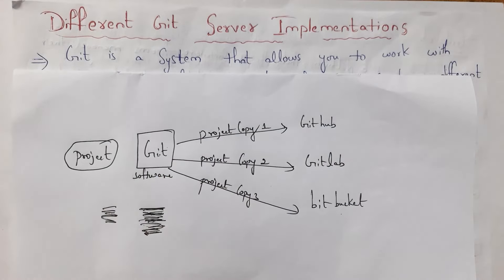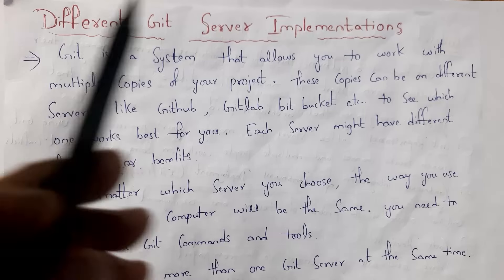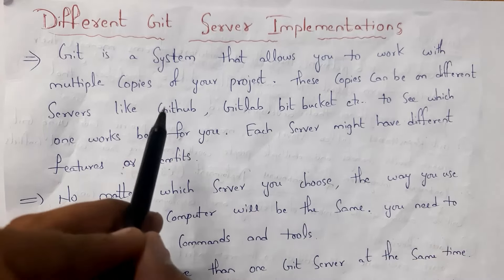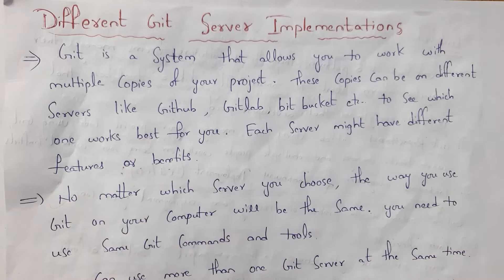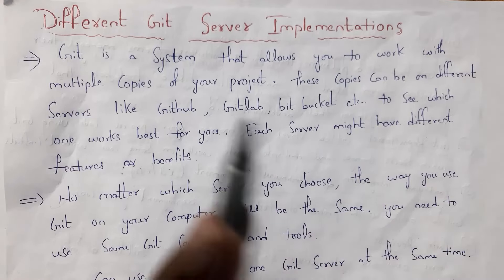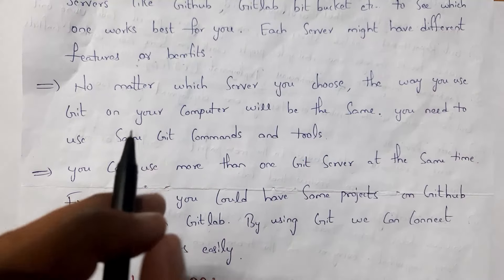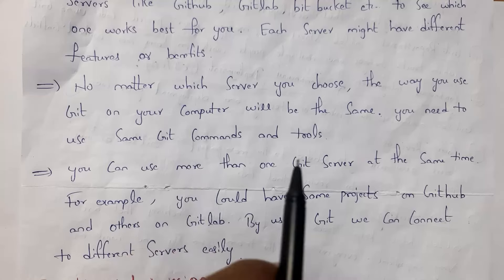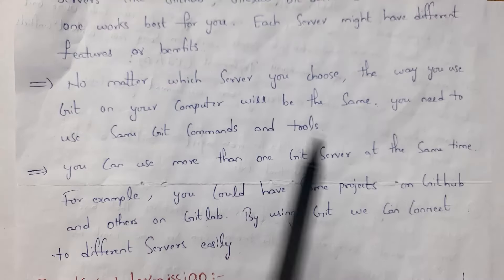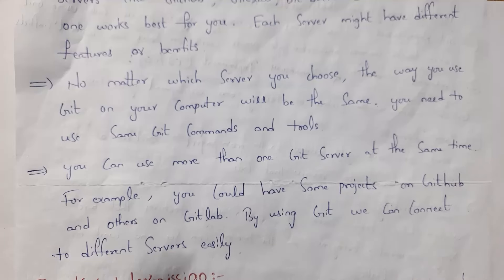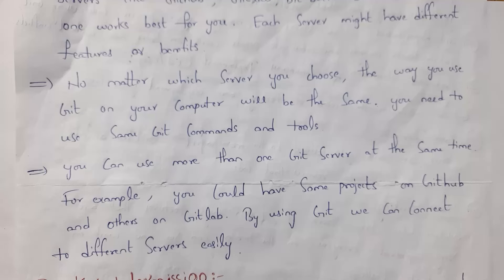You can also work with all the servers at the same time. Git allows you to work with multiple copies of your project on different servers like GitHub, GitLab, Bitbucket, etc., to see which one is best for you. No matter which server you choose, the way you use Git on your computer will be the same — same Git commands and tools. You can even store the same project in both GitHub and GitLab simultaneously. This is all about different Git server implementations.